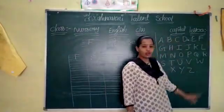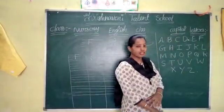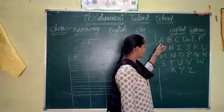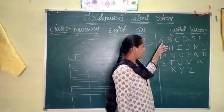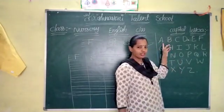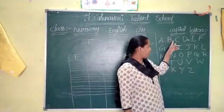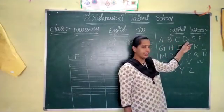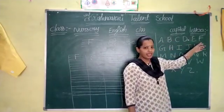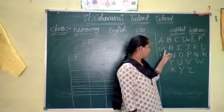Say, what is this? These are all the words — capital letters. Say what is this? A, B, C, D, E, F.